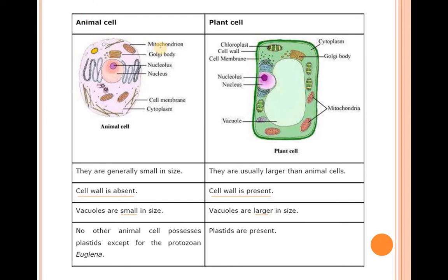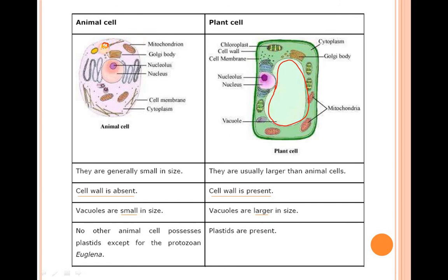Now the differences between animal and plant cells. Both have the Golgi body (also known as Golgi apparatus), nucleus, nucleolus, cell membrane, and cytoplasm. The differences are in: chloroplast, cell wall, and the size of the vacuole. Animal cells are generally small in size. Cell wall is absent in animal cells but present in plant cells. Vacuoles are small in animal cells but very large in plant cells. Exception: no animal cell possesses a plastid except protozoa — for example Euglena — which is an exception. Otherwise plastids are present only in plant cells.